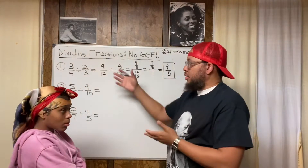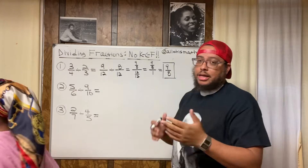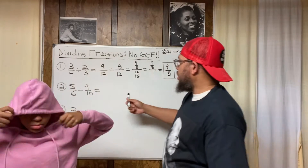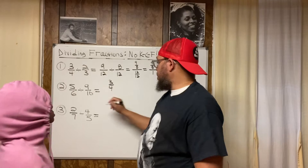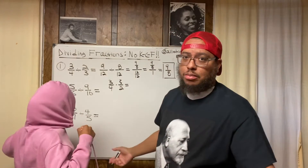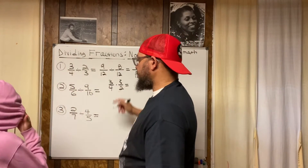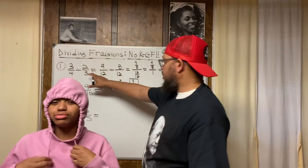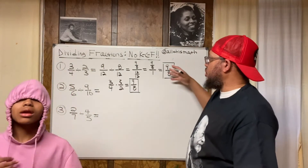In case you're skeptical of this method and you prefer keep change flip — I like keep change flip too — let me verify using that method. Keep three-fourths, change the division sign to multiplication, and flip two-thirds to three-halves. Now it's a multiplication problem: three times three is nine, four times two is eight. We get nine-eighths. So doing keep change flip we get nine-eighths, and dividing straight across with LCDs we also get nine-eighths — same answer either way.